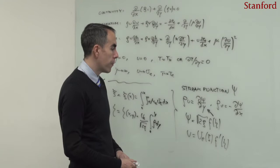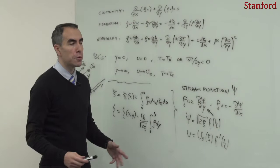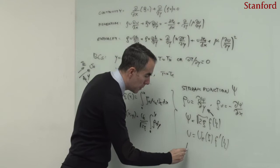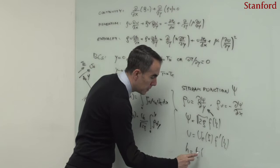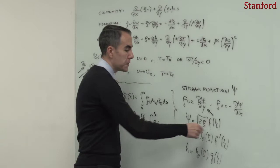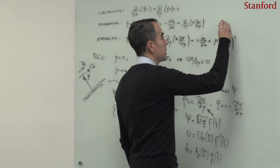We went through a long derivation to derive the transformed versions of the momentum and enthalpy equations. For the enthalpy, one can define h as the edge enthalpy multiplied by a function g that is only a function of eta. Inserting these relations into the equations, one can transform the momentum equation into its transformed form.